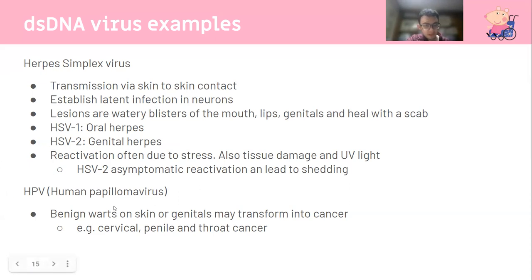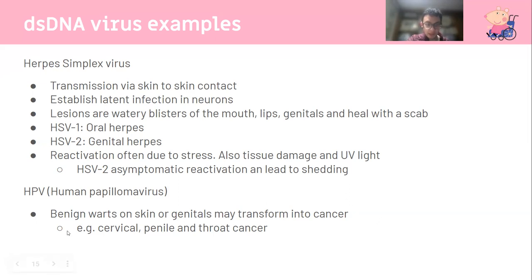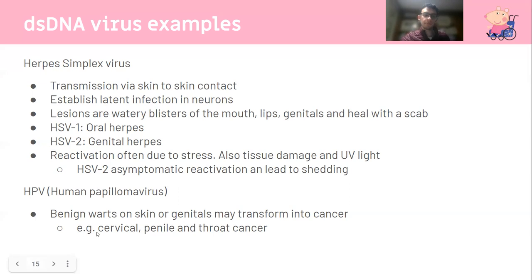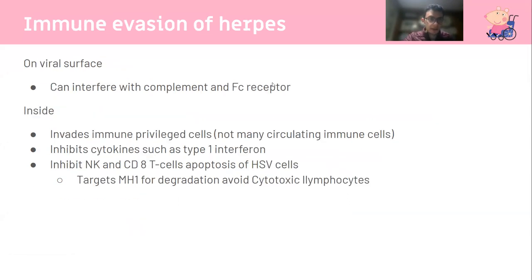Human papillomavirus has about 170 types and causes benign warts in the skin or genitals. It is particularly significant because it may transform into cancer - classically cervical cancer. A pap smear is screening for papillomavirus to detect early cervical cancer. Because cervical cancer presents quite late, it used to have a very high mortality rate, but because of screening that has gone down dramatically.